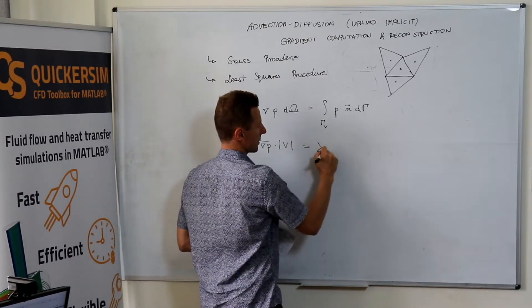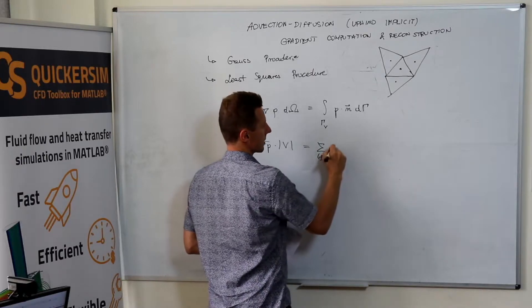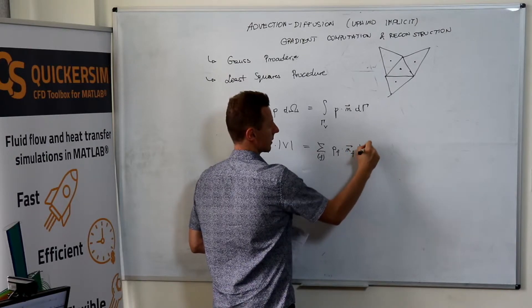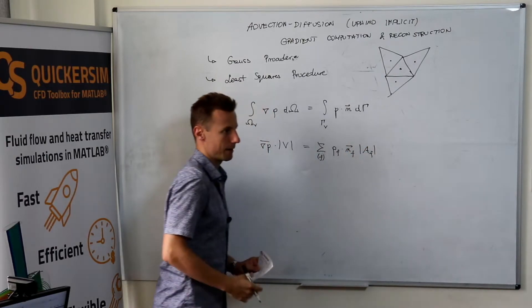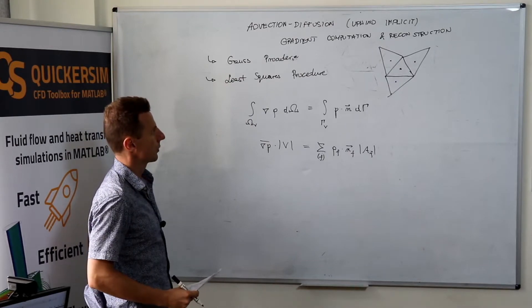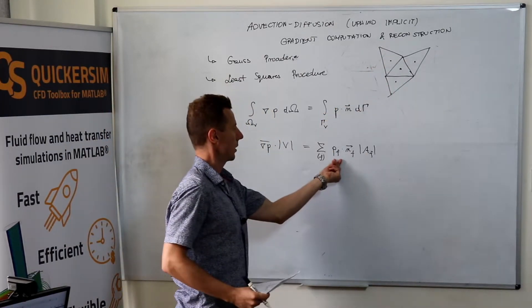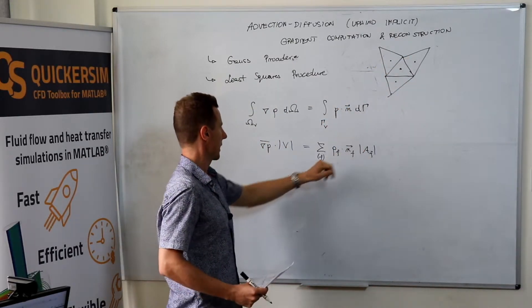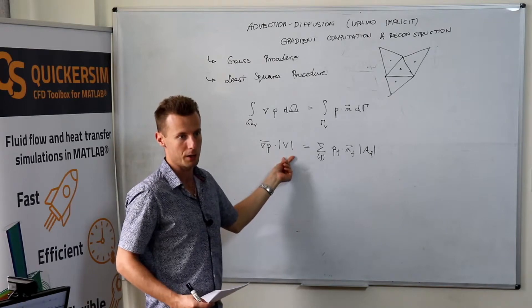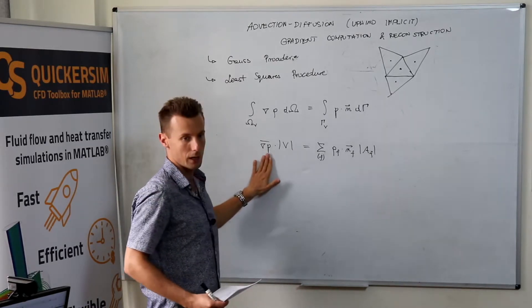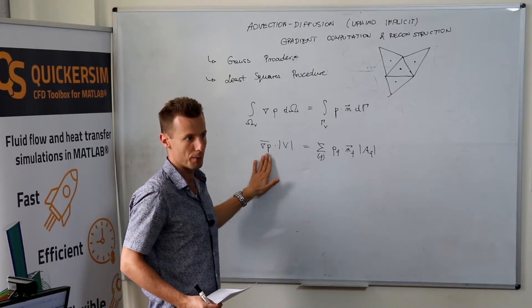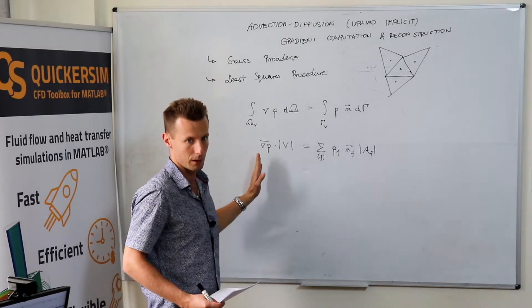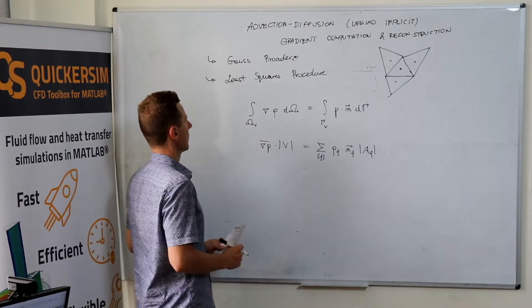This one is obviously sum of all faces, P at the face, times N at the face, times dF. Once you've computed the solution, and you know how to interpolate between two neighboring cells, you can already calculate that, divide by the volume of the cell, and you've got vector representation of the gradient of some quantity. That's the first way.